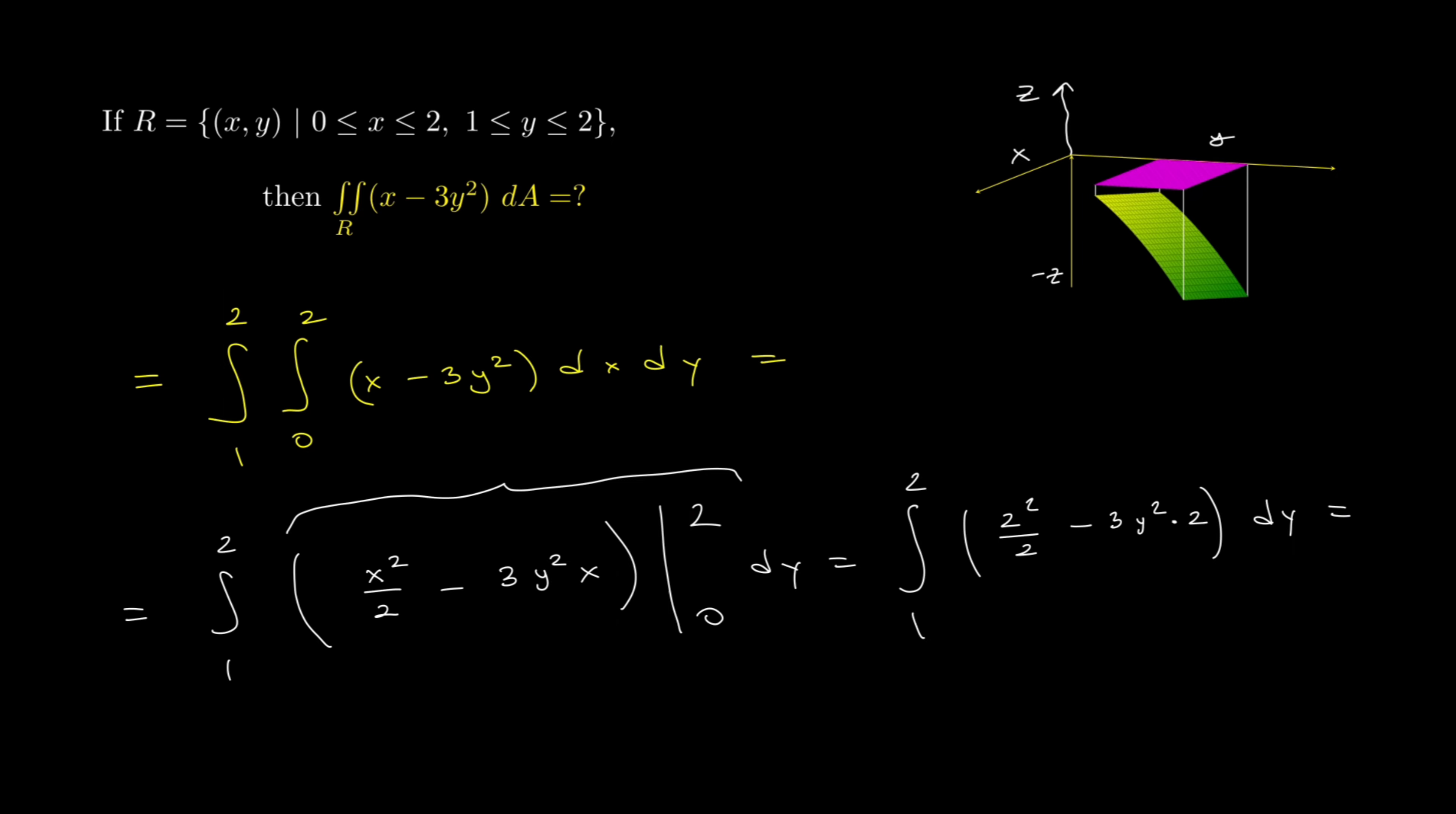And then let's simplify that. So that's 2 squared over 2, so that's 2 minus 6y squared dy. And that is 2y minus 2y cubed, integral from 2 to 1.